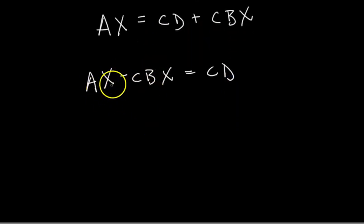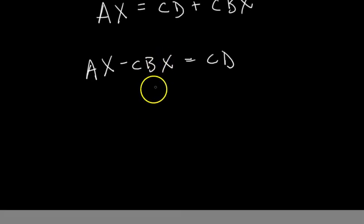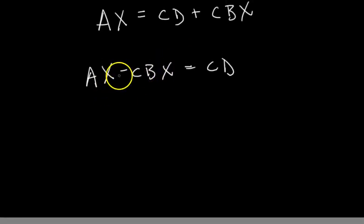I could just—you could think of like factoring out an X and then dividing. And that's how you would do it in algebra. But it's just slightly different now. So right now I have to factor out the X. But since the X is being multiplied on the right side of both of these terms, I have to factor out the X kind of like to the right.